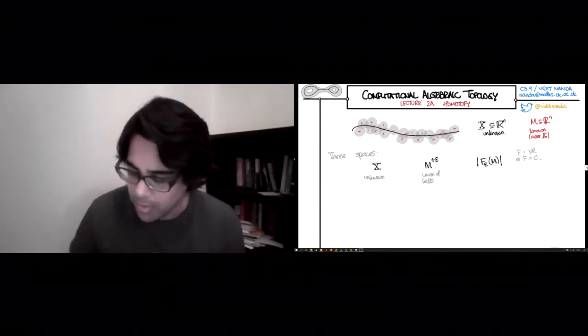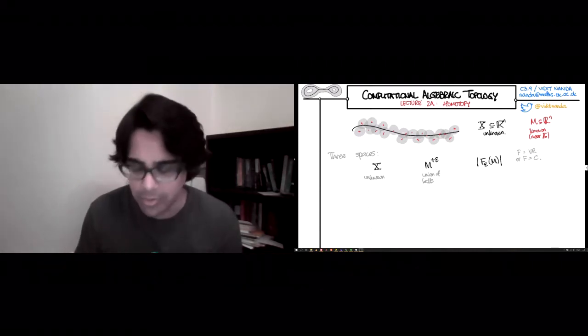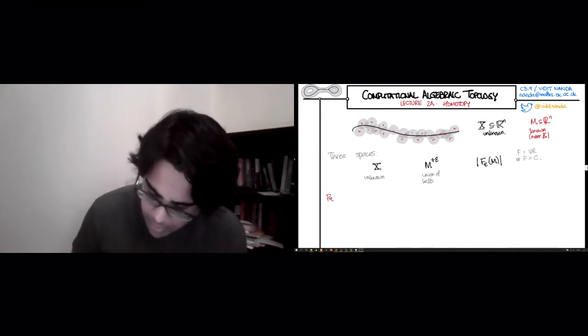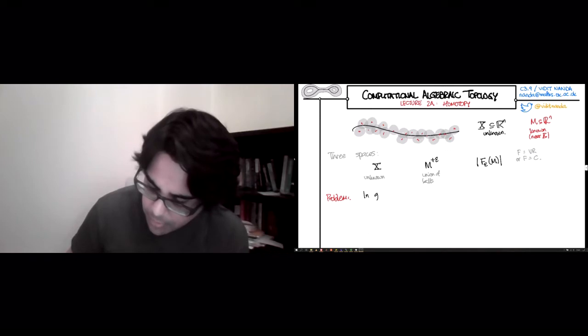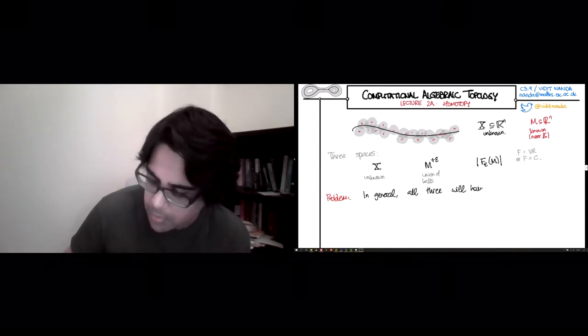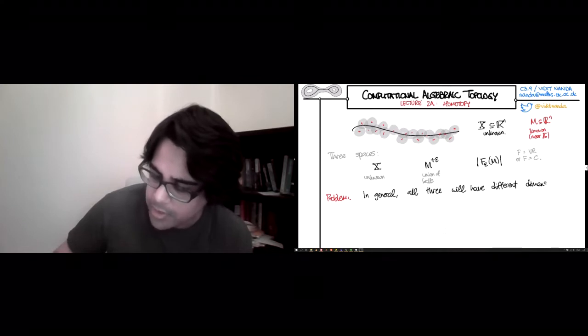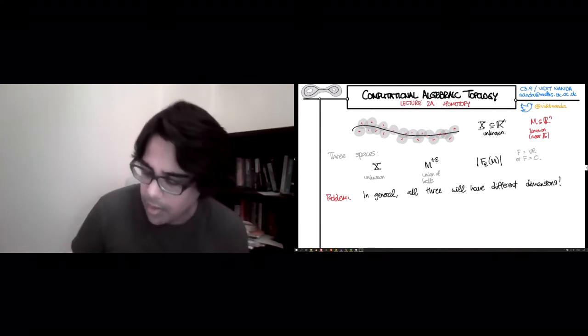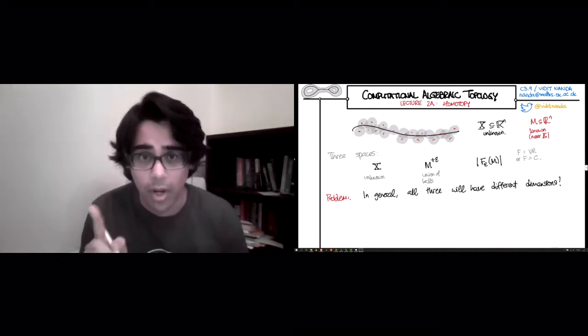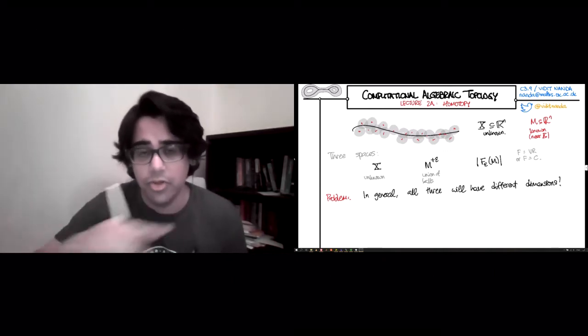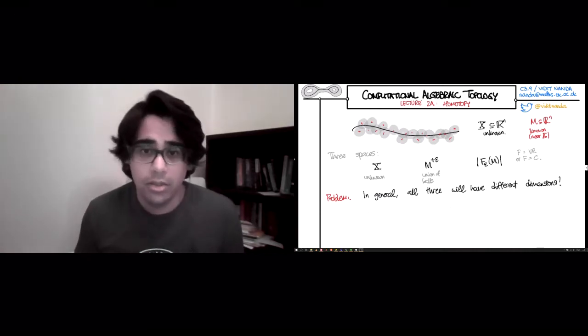And the problem, the reason we're doing everything we're about to do, is that in general all three will have different dimensions. Which is to say, the dimension of X in this case is one, right? It's just a curve. I've drawn it sort of as a one-dimensional object. Great. So that's one.